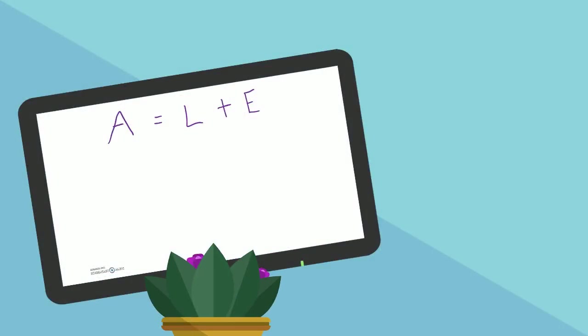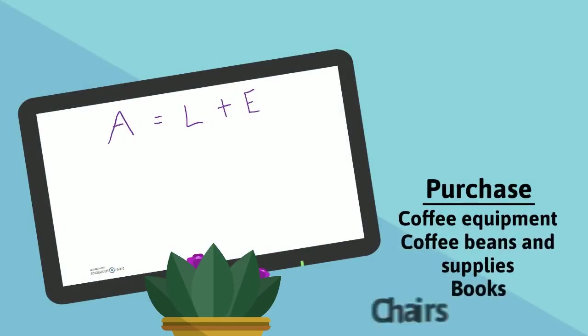The next set of transactions are several purchases getting the store ready for business. We purchased coffee equipment, coffee beans and supplies, books, and furniture and fixtures. Does this impact the accounting equation? Yes. All of these items are now things the company owns. We would increase assets for each of these purchases.